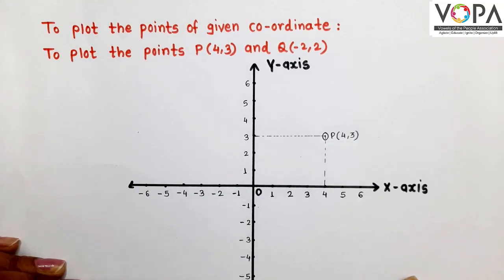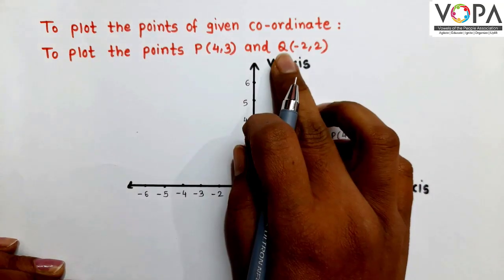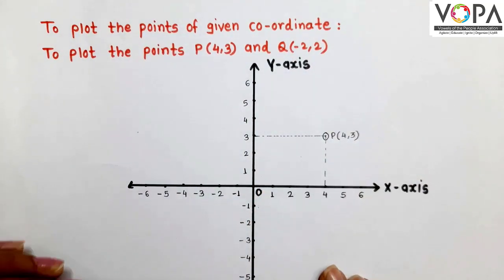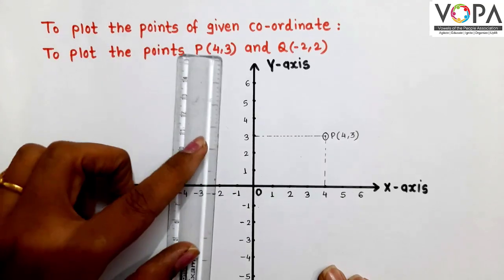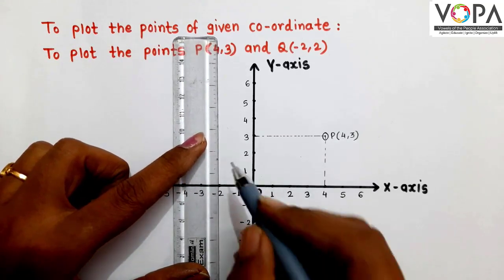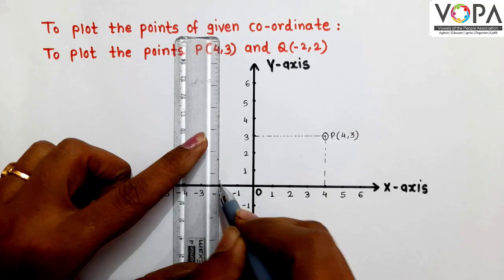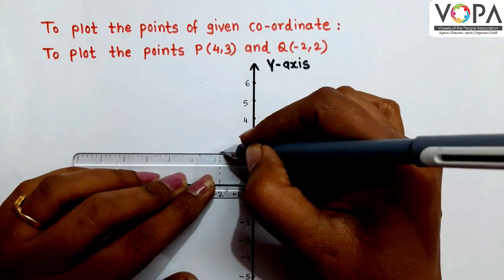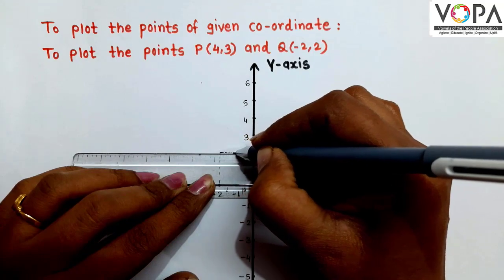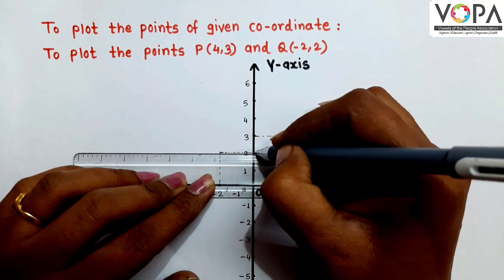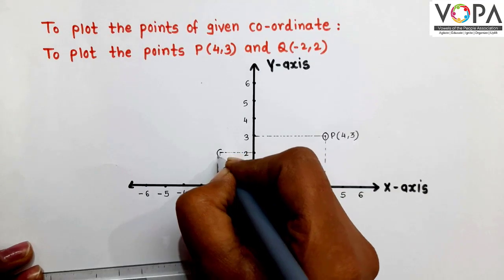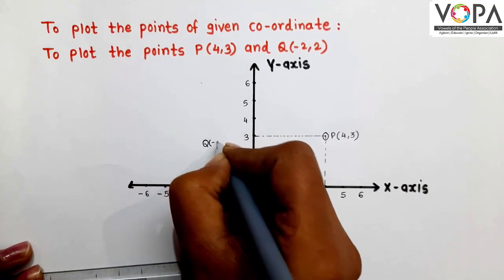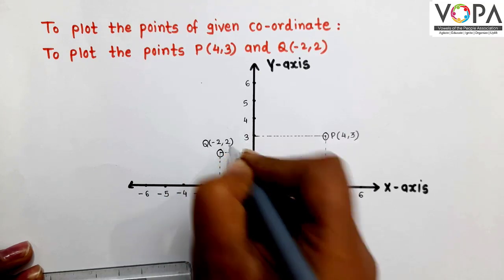Similarly, we can plot point Q(-2,2). First, draw a line parallel to the y-axis through the number -2. Draw a line parallel to the x-axis through the number 2. We get point Q(-2,2).